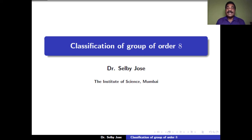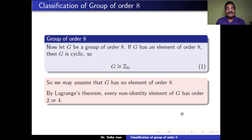In the last session we discussed about the classification of groups of order less than or equal to 15, except 8 and 12. In this session we discuss about the classification of groups of order 8. We show that there are 5 isomorphism classes of groups of order 8, out of which 3 are abelian and 2 are non-abelian.